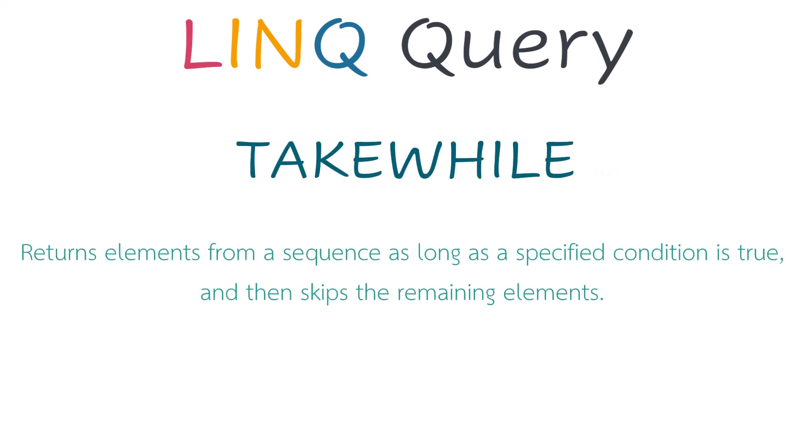TakeWhile returns elements from a sequence as long as a specified condition is true, and then skips the remaining elements. It means we set a condition for this function. As long as this condition is true, we take the elements from the source. Once the condition is false, it will be skipped and not performed anymore.